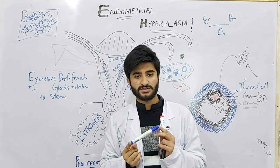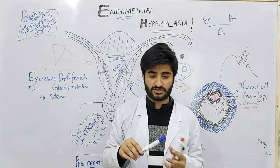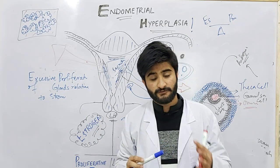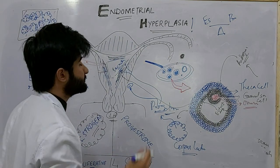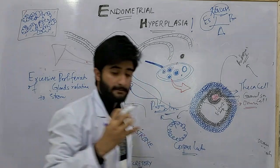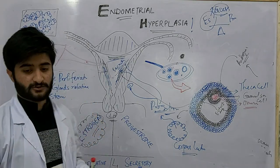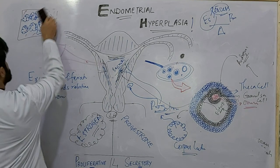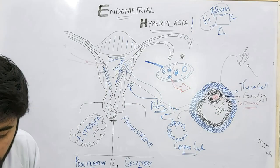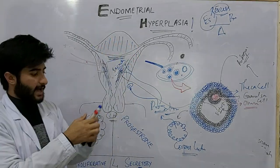In the first 14 days the balance is toward estrogen; in the next 14 days the balance is toward progesterone. So the proliferative effect of estrogen is cancelled by progesterone — whatever proliferation happened in the first 14 days is counter-regulated in the next 14 days. Pathology starts when there is an excess of estrogen that is not counter-regulated by progesterone, leading to endometrial hyperplasia. Therefore, anything that causes estrogen excess is a risk factor for endometrial hyperplasia.